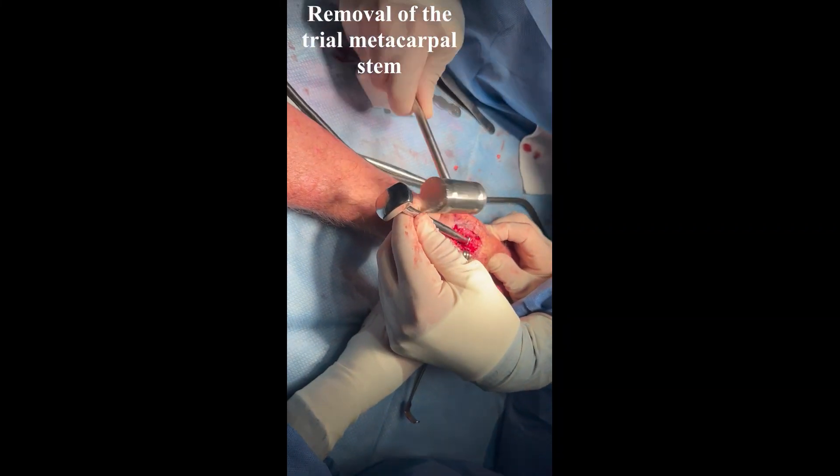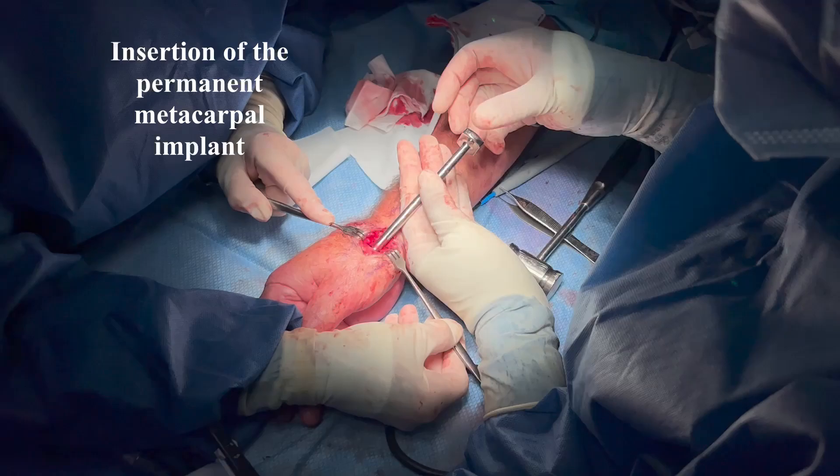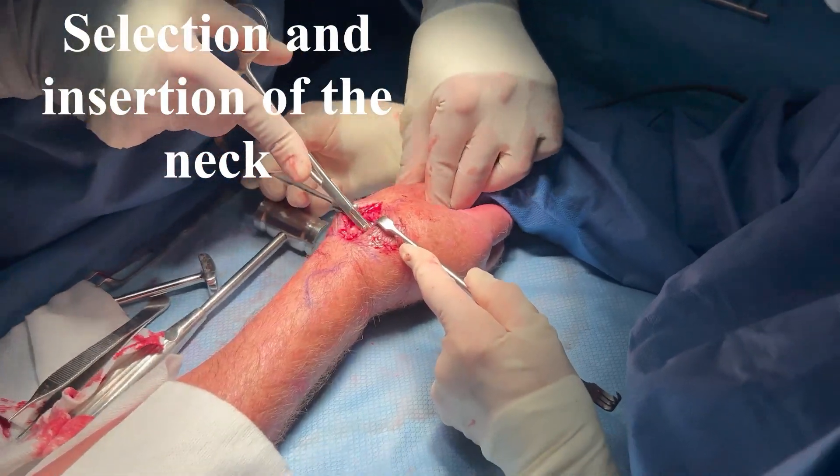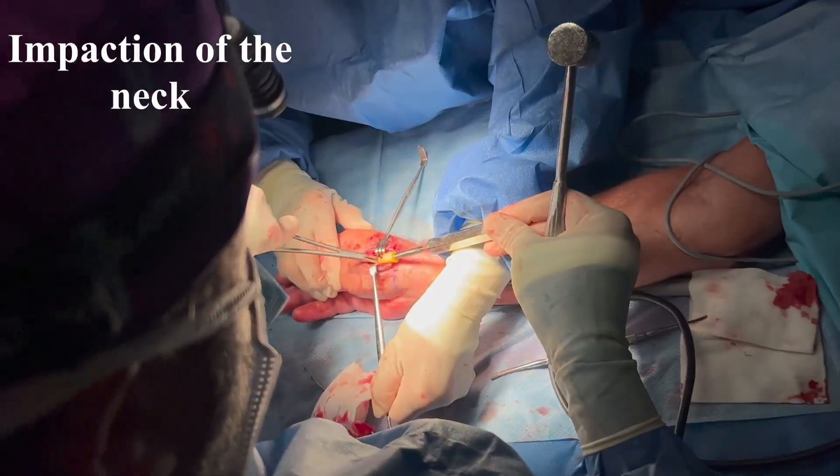The permanent implant is tested for stability after impaction. The trial stem is removed and replaced with a permanent implant. Next, the neck is selected, inserted and impacted.